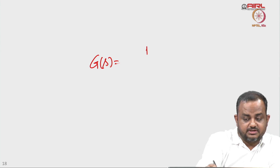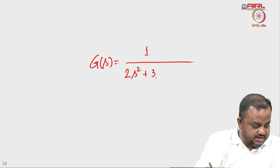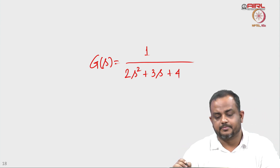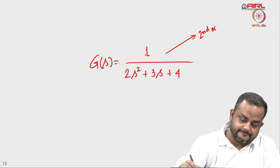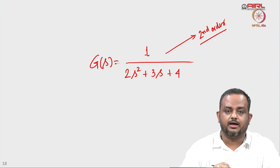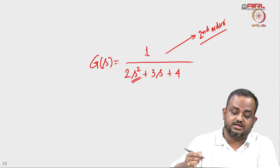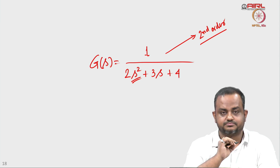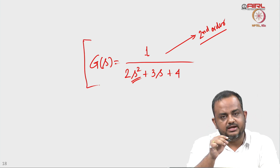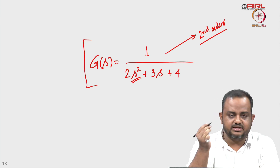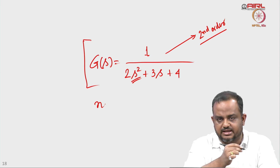Assume we have a system represented as a transfer function with denominator 2s² + 3s + 4. We can tell that this system is a second-order system. In a differential equation form, it would be a second-order differential equation — the s² term tells us that. When we want to represent this system in MATLAB, we write it in terms of numerator and denominator coefficients.